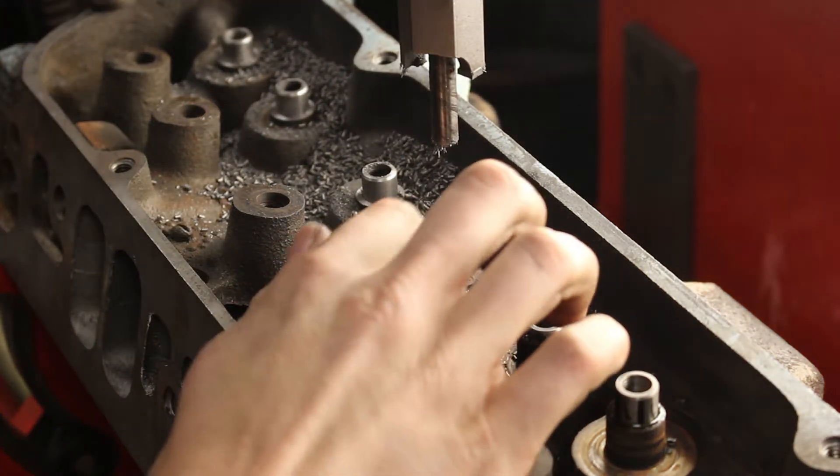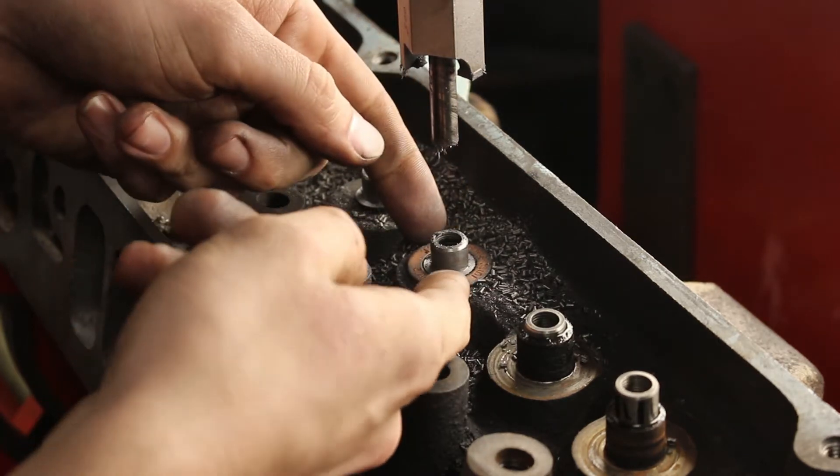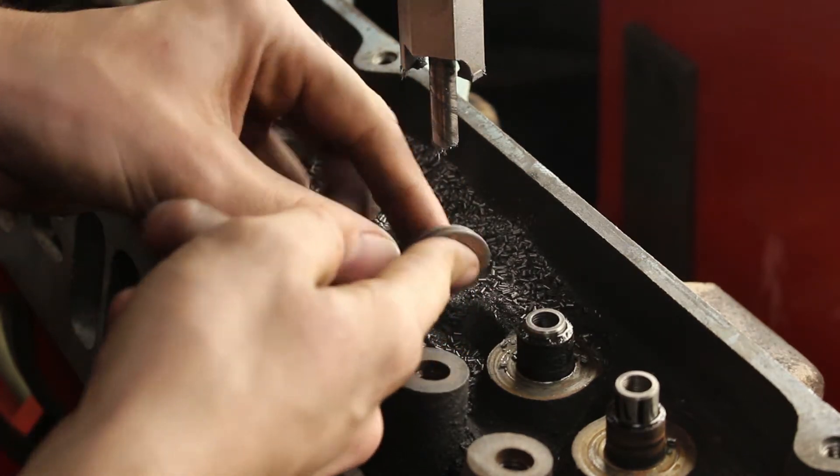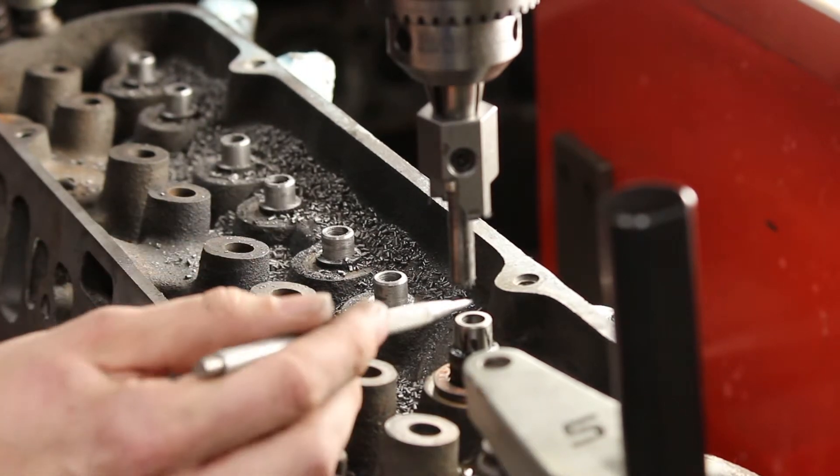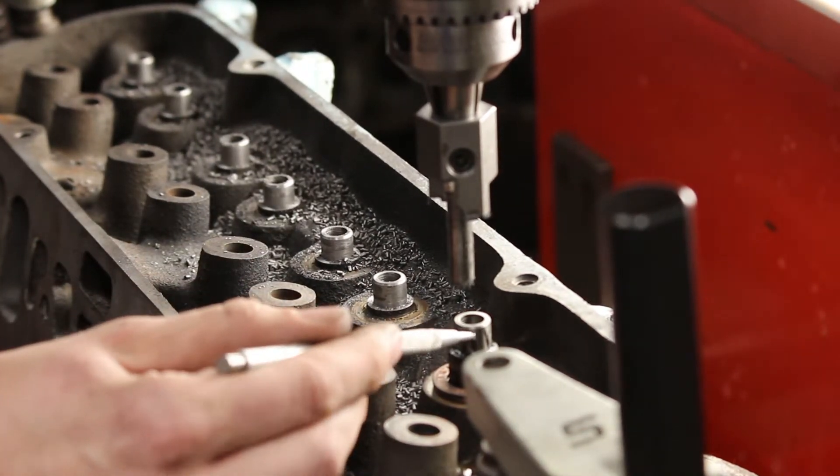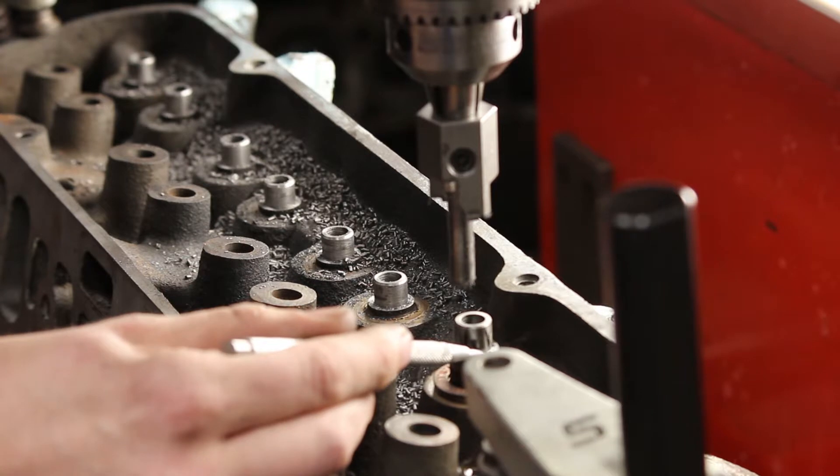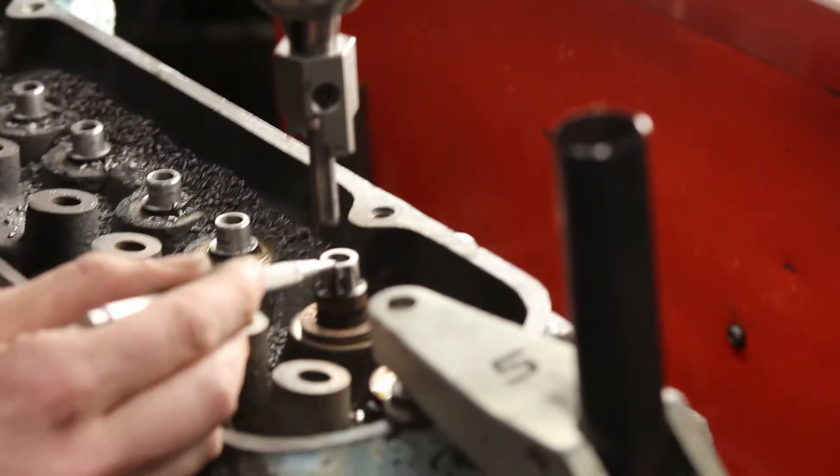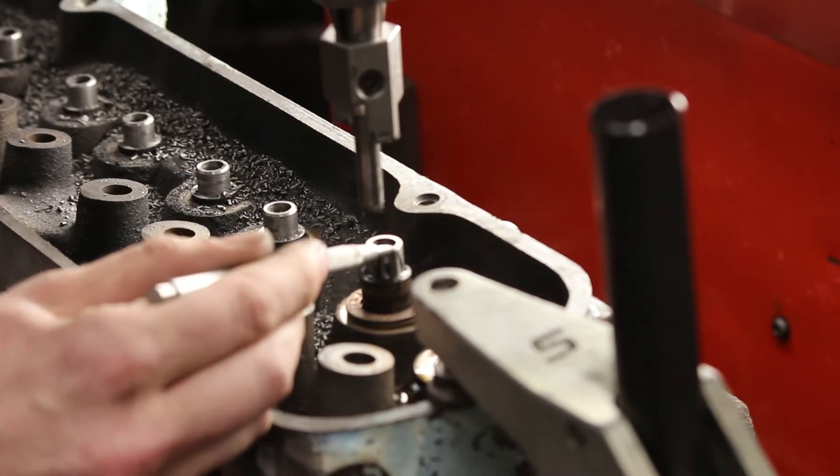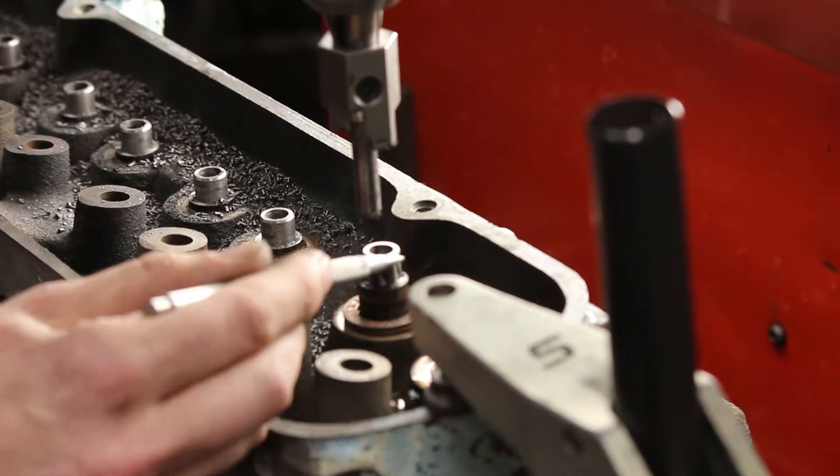You can see as soon as the tool touches the spring shims it rotates them. That's when you know when to stop. So like I was saying earlier, this tool makes two cuts simultaneously. We're cutting the OD of the guide, the OD of the iron lifter or guide boss, and the top of the new guide. And we're also chamfering the new guide as well.